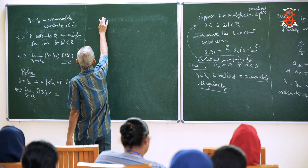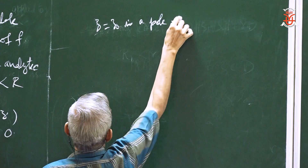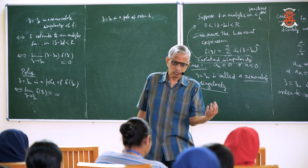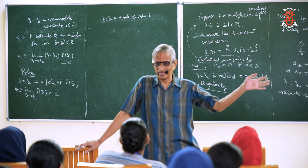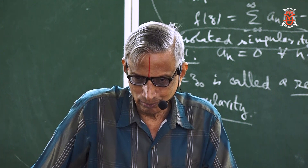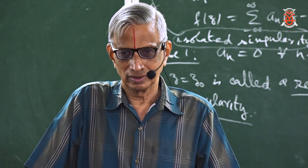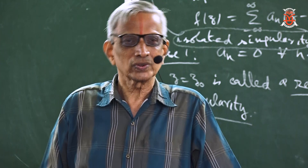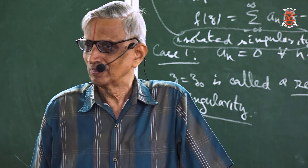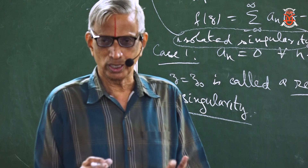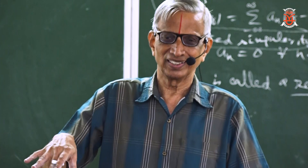If z₀ is a pole of order k, you have (z − z₀)^(−k) as the leading negative power and nothing beyond. If we multiply by (z − z₀)^k, there will be no negative powers, so the result will have a removable singularity at z₀. Roughly speaking, (z − z₀)^k · f(z) is going to be analytic — you can define f at z₀ so that this becomes analytic.